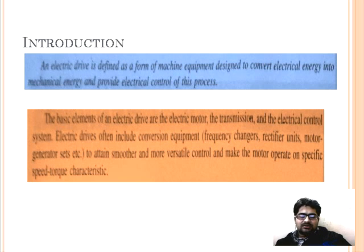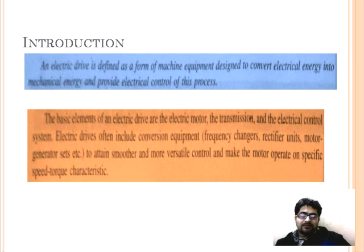The control equipment usually consists of relays, contactors, master switches, solid state devices such as diodes, transistors, and thyristors. The aggregate of electric motor, transmitting shaft, and the control equipment by which the motor characteristics are adjusted and their operating conditions with respect to the mechanical load varied to suit the particular requirement is called an electric drive.